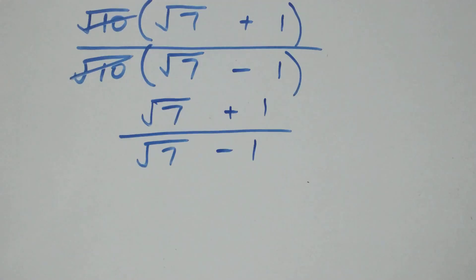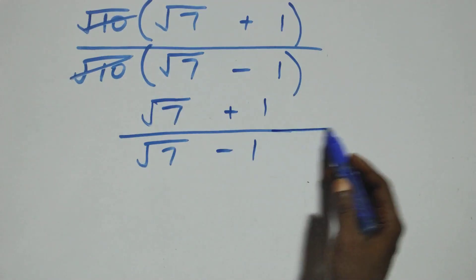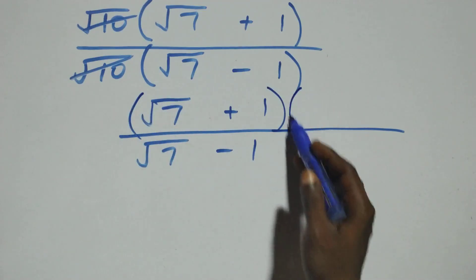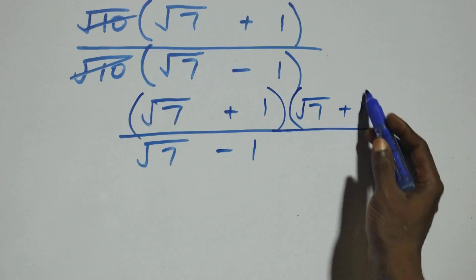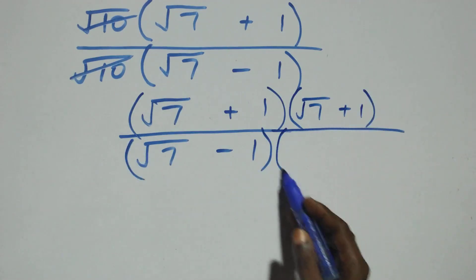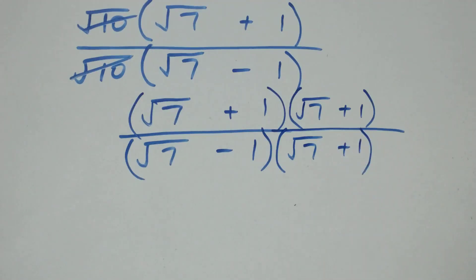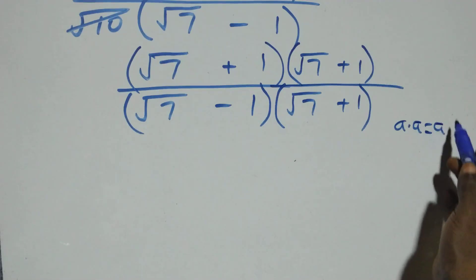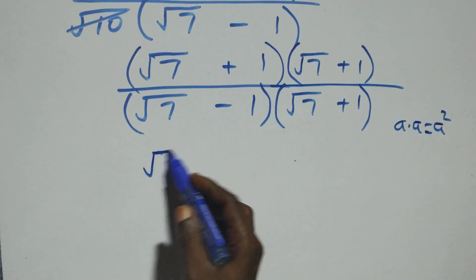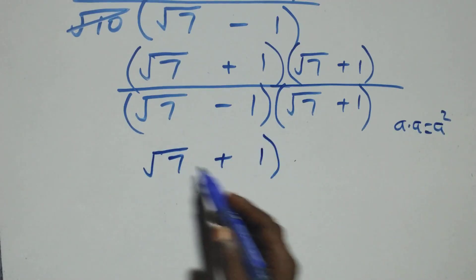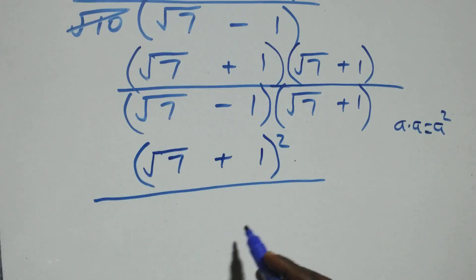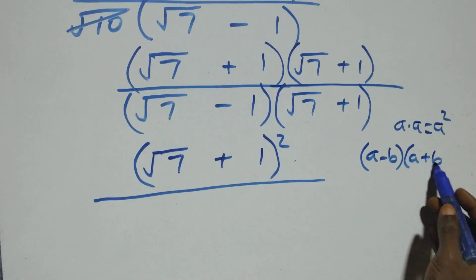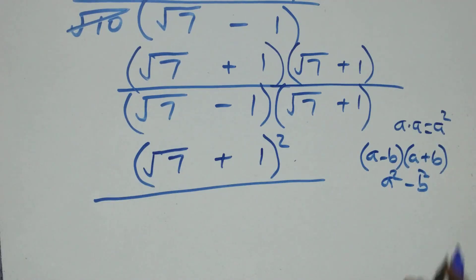Next step: we rationalize this and multiply the numerator and denominator by the conjugate of the denominator, that is multiply by (√7 + 1). This gives us (√7 + 1)² in the numerator. In the denominator, this follows when we have (a − b)(a + b), which is the same as a² − b², the difference of two squares.